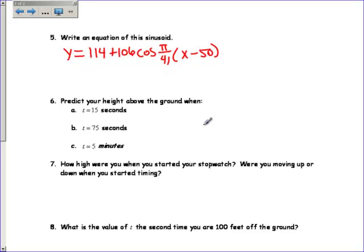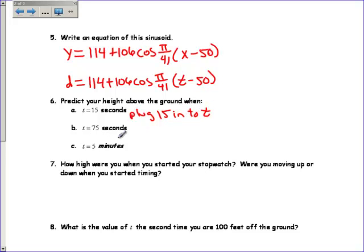So what you can do with this is answer all of these questions. Predict your height above the ground when t equals 15 seconds. Let's write this more as like a distance at a time. What if I wrote this as distance above the ground equals 114 plus 106 cosine π over 41 and then t minus 50. So predict your height above the ground when t equals 15 seconds. You're going to plug 15 in for t. And t equals 75 seconds, you plug 75 in to t.